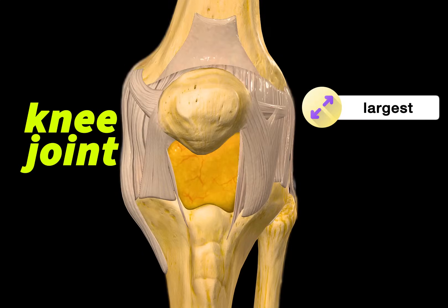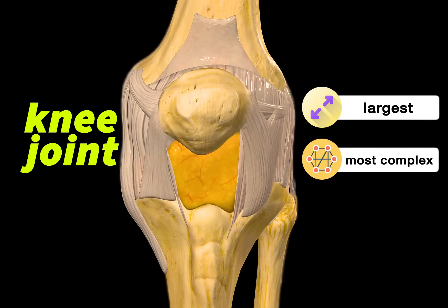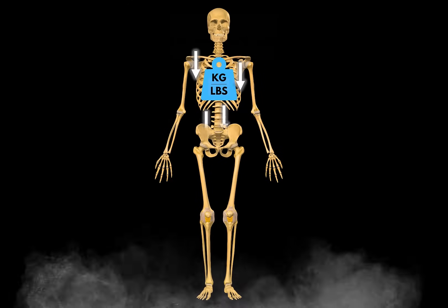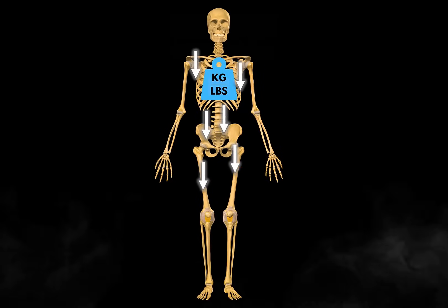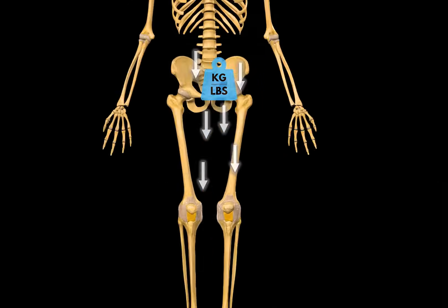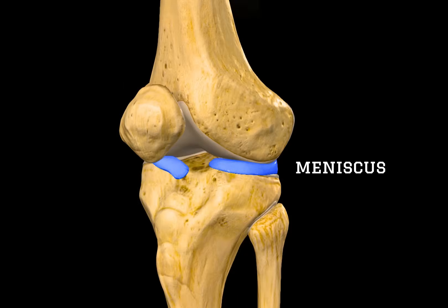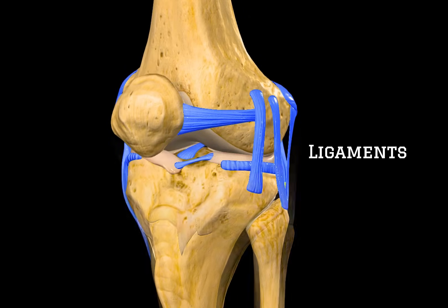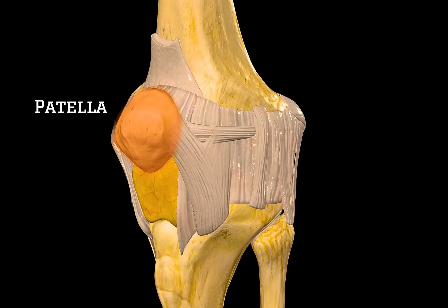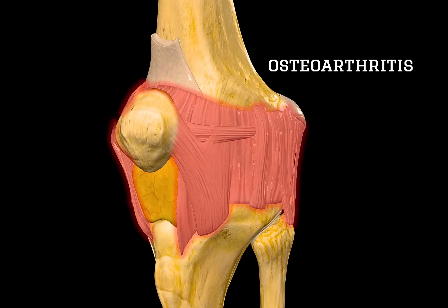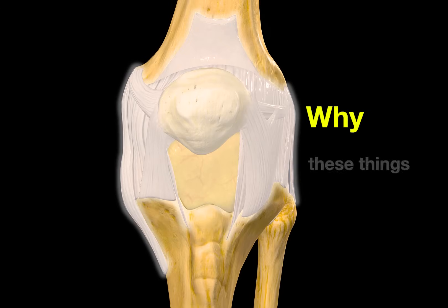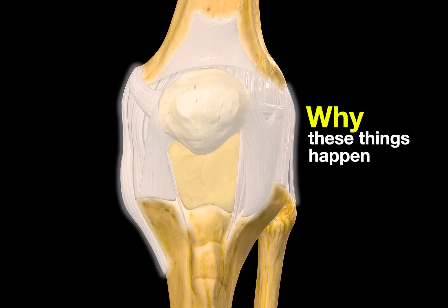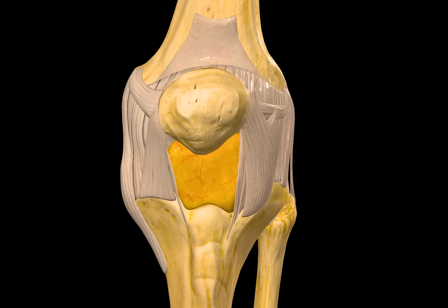The knee joint is the largest and one of the most complex joints in the body. It carries our entire weight, and that is exactly why it's so prone to problems. Meniscus tears, ligament injuries, patellar dislocations, and of course wear and tear like osteoarthritis show up in clinics all the time. But to understand why these things happen, we need to go inside the knee joint.